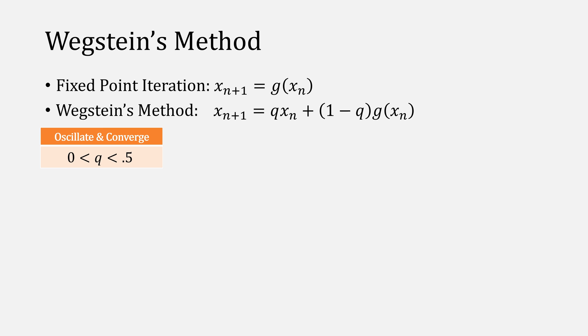When fixed-point iteration is oscillating and converging, q is between 0 and 0.5. If fixed-point iteration would oscillate and diverge, we'd pick a q between 0.5 and 1. If it's converging monotonically, then a value of less than 0.